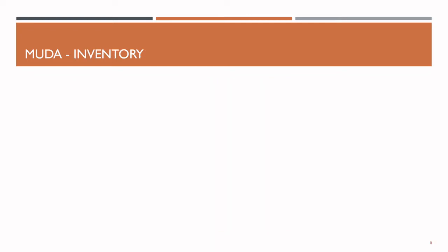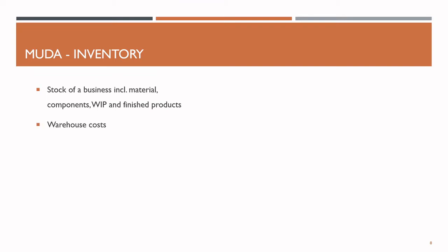The second waste, inventory, is defined by the Oxford Dictionary as all stock of a business including components, work in progress, and finished products. Apart from obvious disadvantages of high inventory like high warehouse costs, this one may seem counterintuitive to some of you, because high inventory might seem like a great solution to keep your production running smoothly. But in fact, inventory might hide serious problems in your production or supply chain.